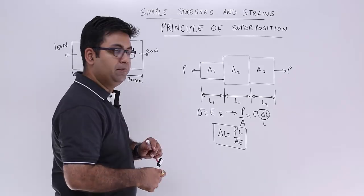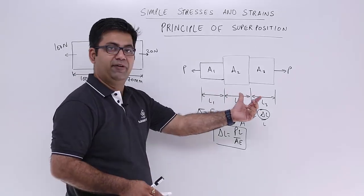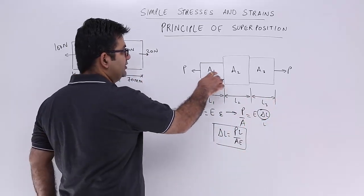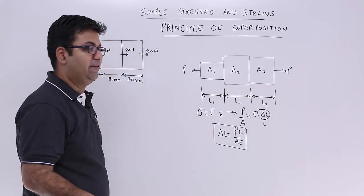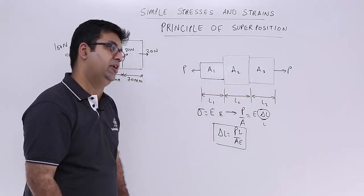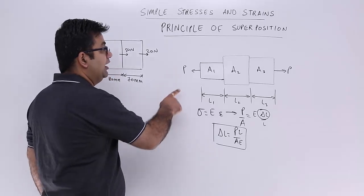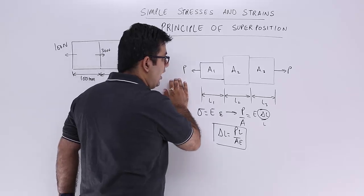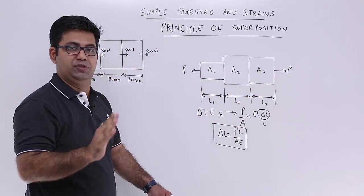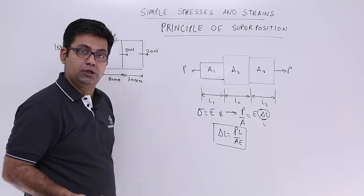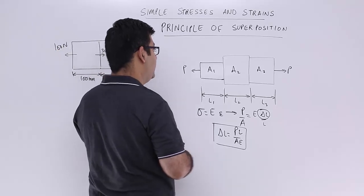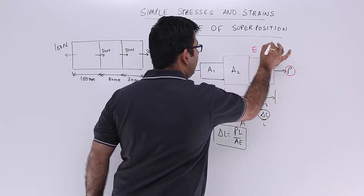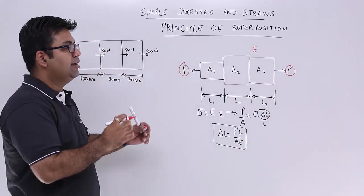Now in this kind of a problem you have a stepped shaft or it can be a stepped bar. You have different areas. If you have stepped shaft you have different diameters. Different diameters will produce different areas. But the entire material or the entire body is acted upon by the same amount of loading on both sides. The material is also the same. So in this case the load is same and the material is same. So P and E will be same.